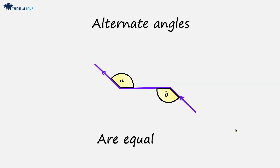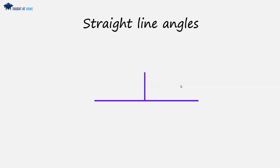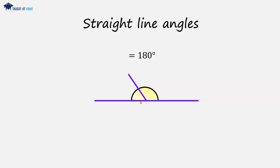An important thing to know: straight line angles. We've got a straight line and the angles on it will add up to 180 degrees. It doesn't matter what the two angles are — when you add them together, if they're on a straight line, they'll add up to 180 degrees.